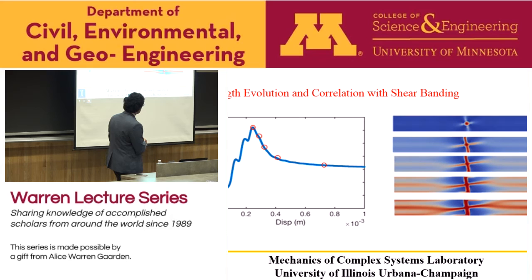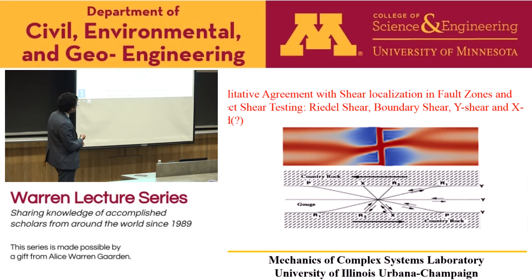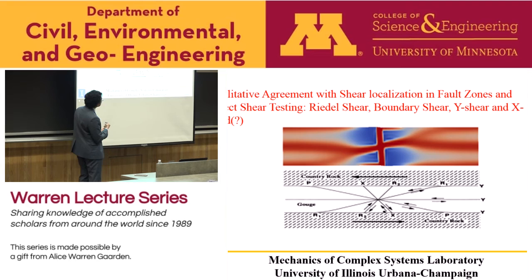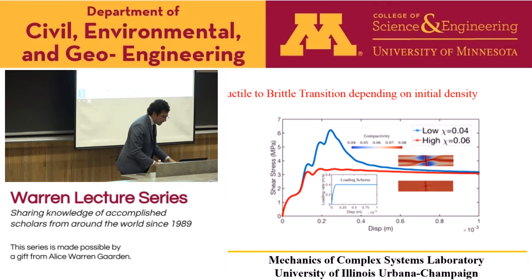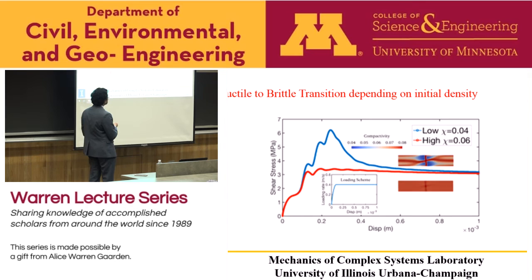The model predicts a shear band growing first as a Riedel shear, which grows and hits the boundary creating a boundary shear, then bifurcates into a Y shear — the most effective mode for accommodating large slips. Comparing with Logan (1987) schematic of shear patterns observed in fault zones — throughgoing Y shear, boundary shear, Riedel shear 1, Riedel shear 2, and X band — we capture the Riedel shear, boundary shear, Y shear, and partially the X band. Starting with a loose material gives ductile-like behavior without localization; starting dense gives dilation, shear bands, and strain softening.